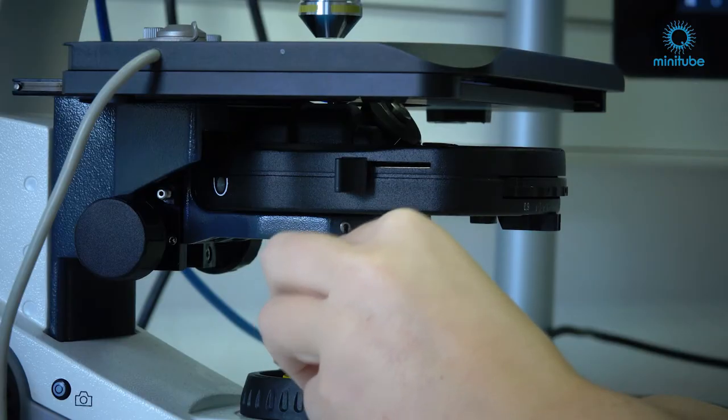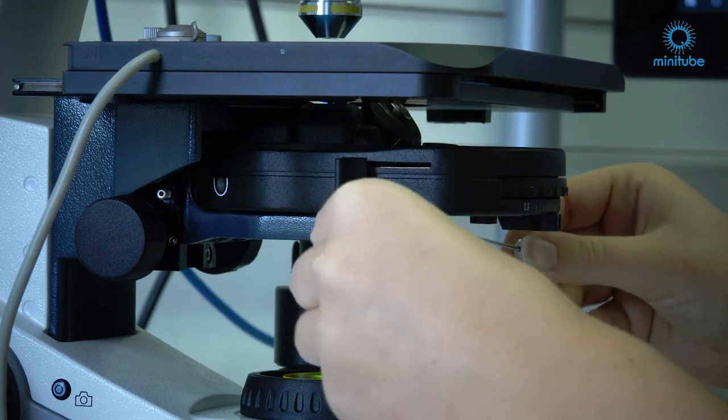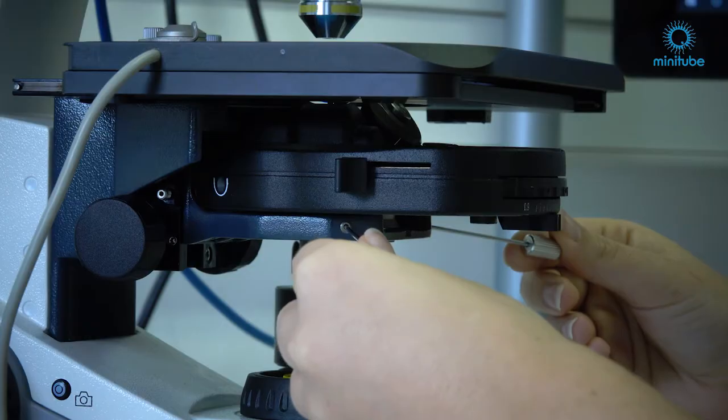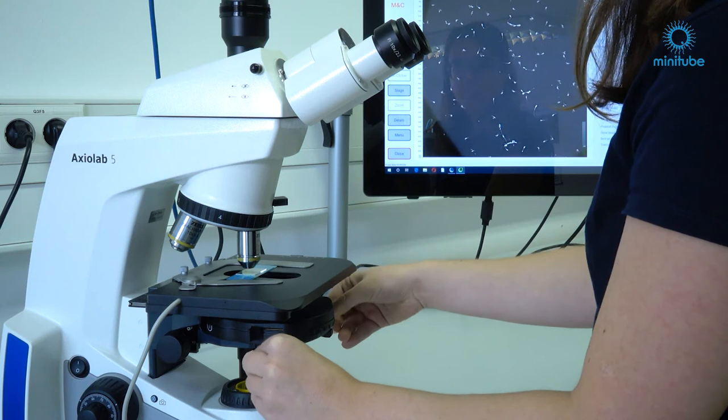Use the two screws on both front sides of the condenser. Now center the field diaphragm image with these two centering screws on the condenser carrier.